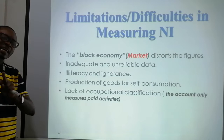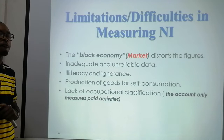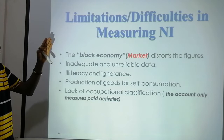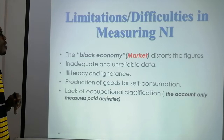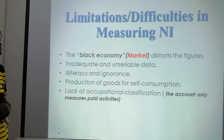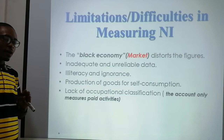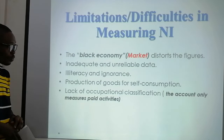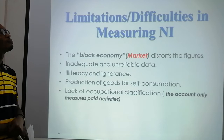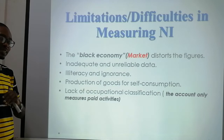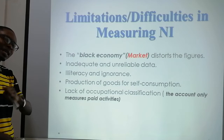Upon measuring national income, there are some difficulties that make it very difficult to get accurate figures. The topic is: limitations or difficulties in measuring national income. First, we have the black economy — black markets distort the figures. In a country where black markets are very dominant, it is very difficult to get accurate national income figures, because there are people trading in black markets which we cannot account for.